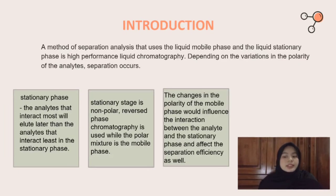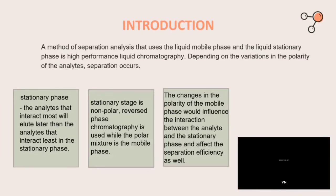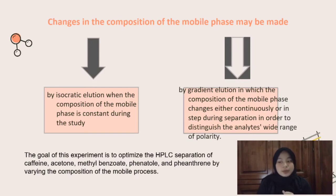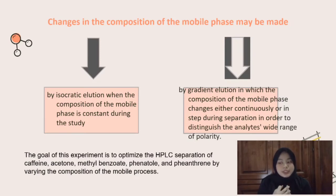Changes in polarity also affect the separation efficiency. The changes in the composition of the mobile phase may be made by isocratic elution, when the composition of the mobile phase is constant during the study, and also by gradient elution, in which the composition of the mobile phase changes either continuously or in steps during the separation, in order to analyze analytes with a wide range of polarity. The goal of this experiment is to optimize the HPLC separation of caffeine, aspartame, methylbenzoate, phenol, and phenetole by varying the composition of the mobile phases.